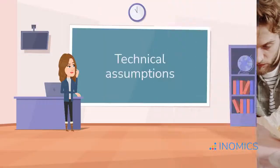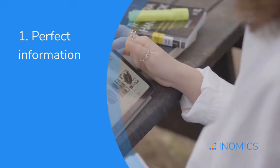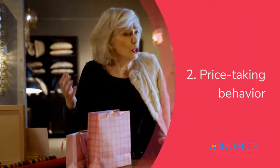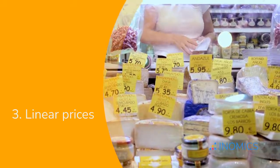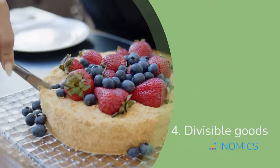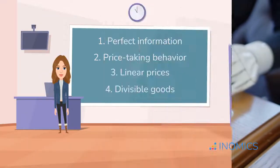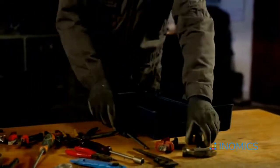Then there are some more technical assumptions we use to simplify the math. Perfect information: we assume that consumers know everything about the products they're choosing from. Price-taking behavior: consumers accept market prices and don't bargain. Linear prices: every unit of a good costs the same. Divisible goods: you can buy fractional units of any good, like 2.5 pairs of jeans or 0.3 of a book. Obviously unrealistic, but super helpful for building smooth mathematical models. These assumptions are tools, not rules — they help us build models that are mathematically feasible and still provide useful insights.